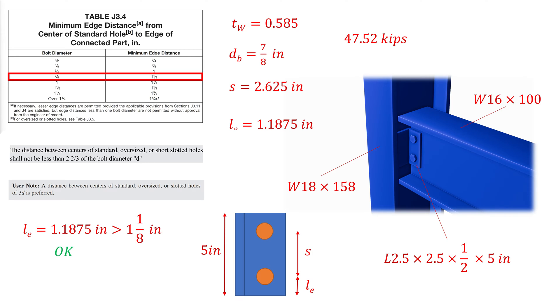For that, we need the load per bolt, which is the total shear at the connection divided by the number of bolts, which gives 23.76 kips per bolt.